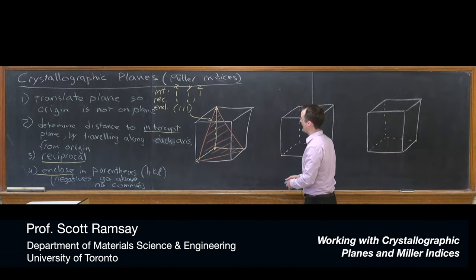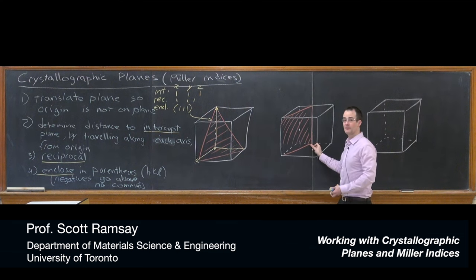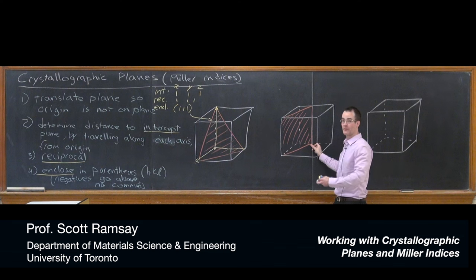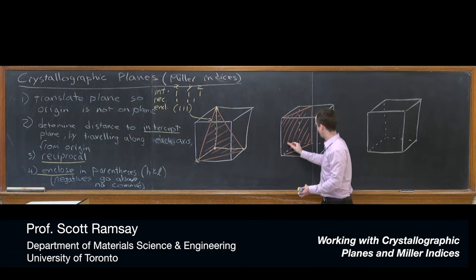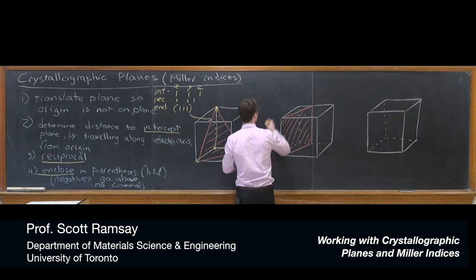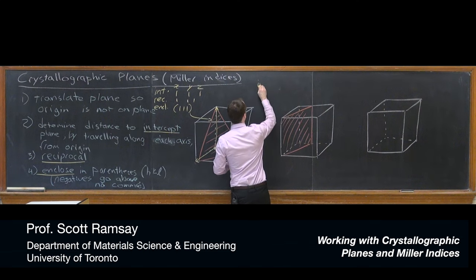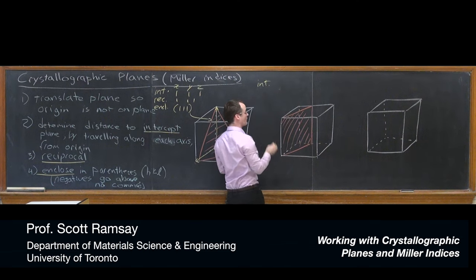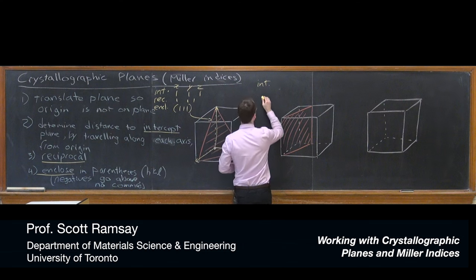What about if we take a look at another plane over here? This plane crosses through the Y axis at half of the lattice parameter in the Y direction. We're going to go systematically - intercept, reciprocal, enclosure.